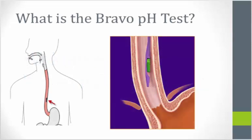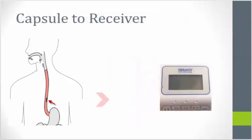This test begins when the physician places a capsule on the wall of your swallowing tube called your esophagus. The capsule measures and records the acid levels in your esophagus by sending information to a receiver that you will wear outside your body.